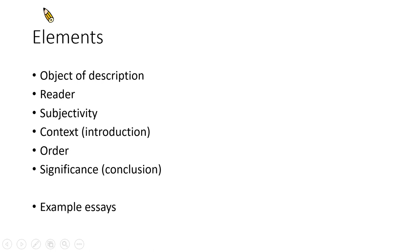To write a typical description essay, you'll need to think about these elements. First, what do you want to describe — the object of description? And then, who are you describing it to? Who's your reader? And then, how subjective should your description be? Should it be just figures, numbers, measurements, and colors, or do you want to use symbolism, metaphor, storytelling, that kind of thing?